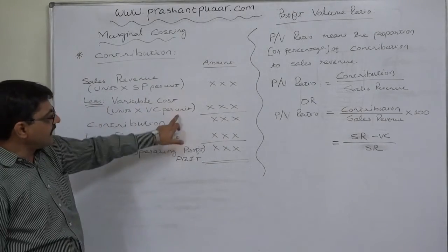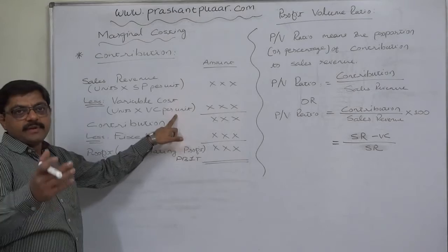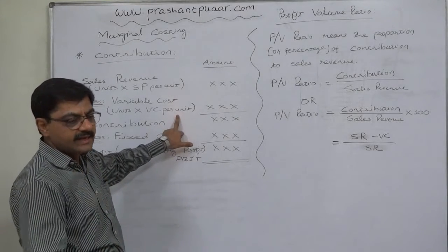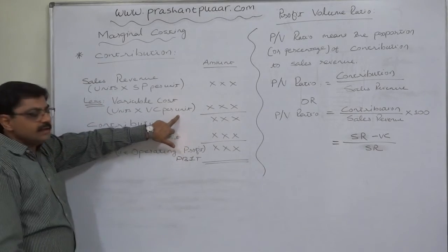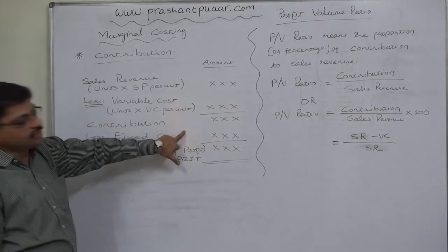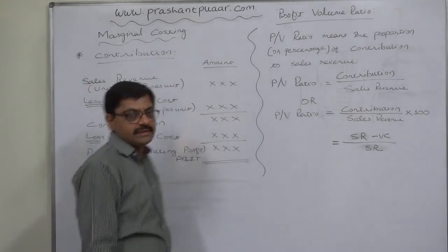On the other hand, if market forces change our variable cost, say increase or decrease in price of raw material, increase or decrease in direct labor rate, etc., then with change in variable cost, the contribution will also change and ultimately PV ratio will change.